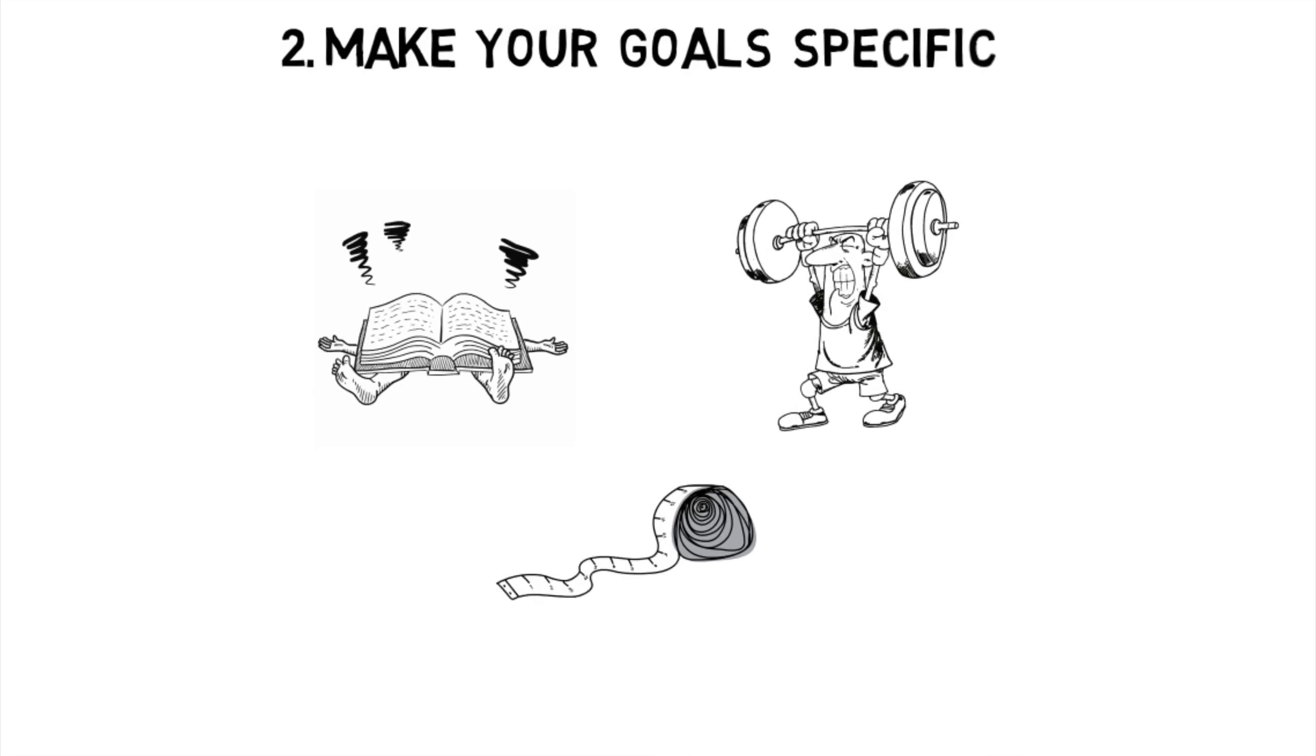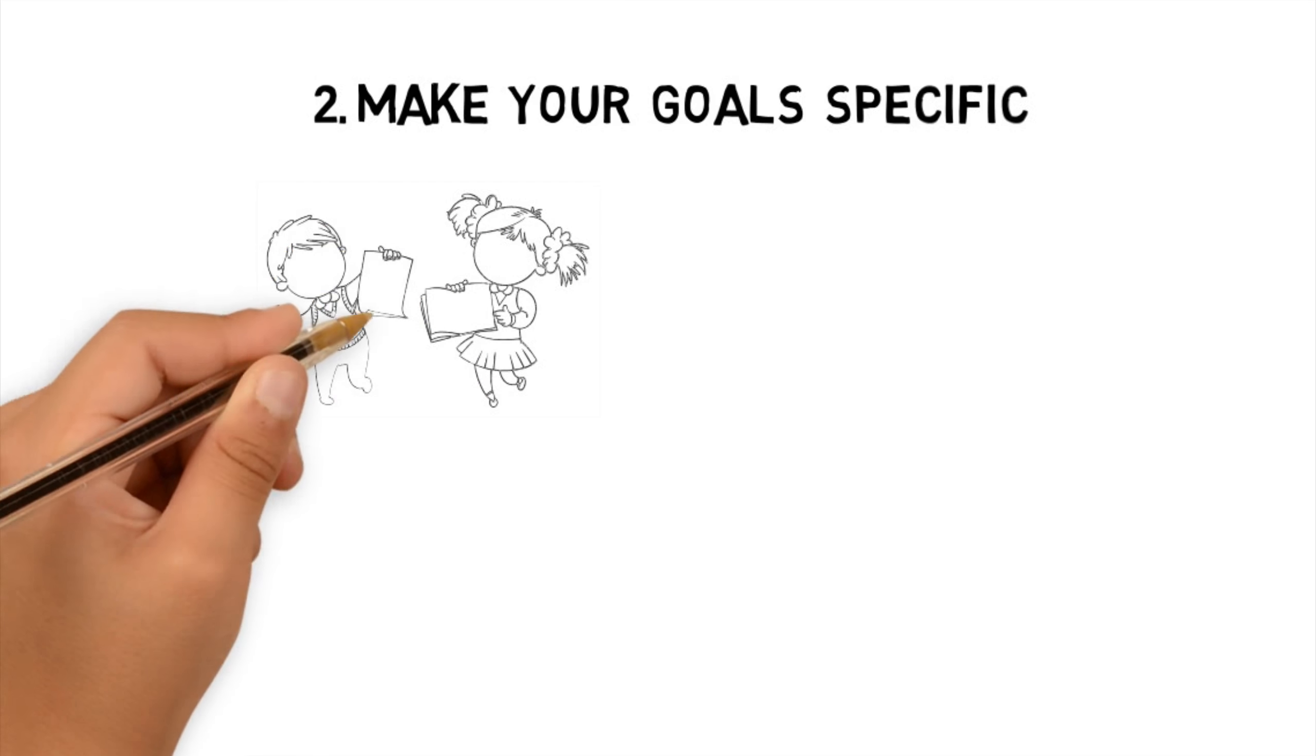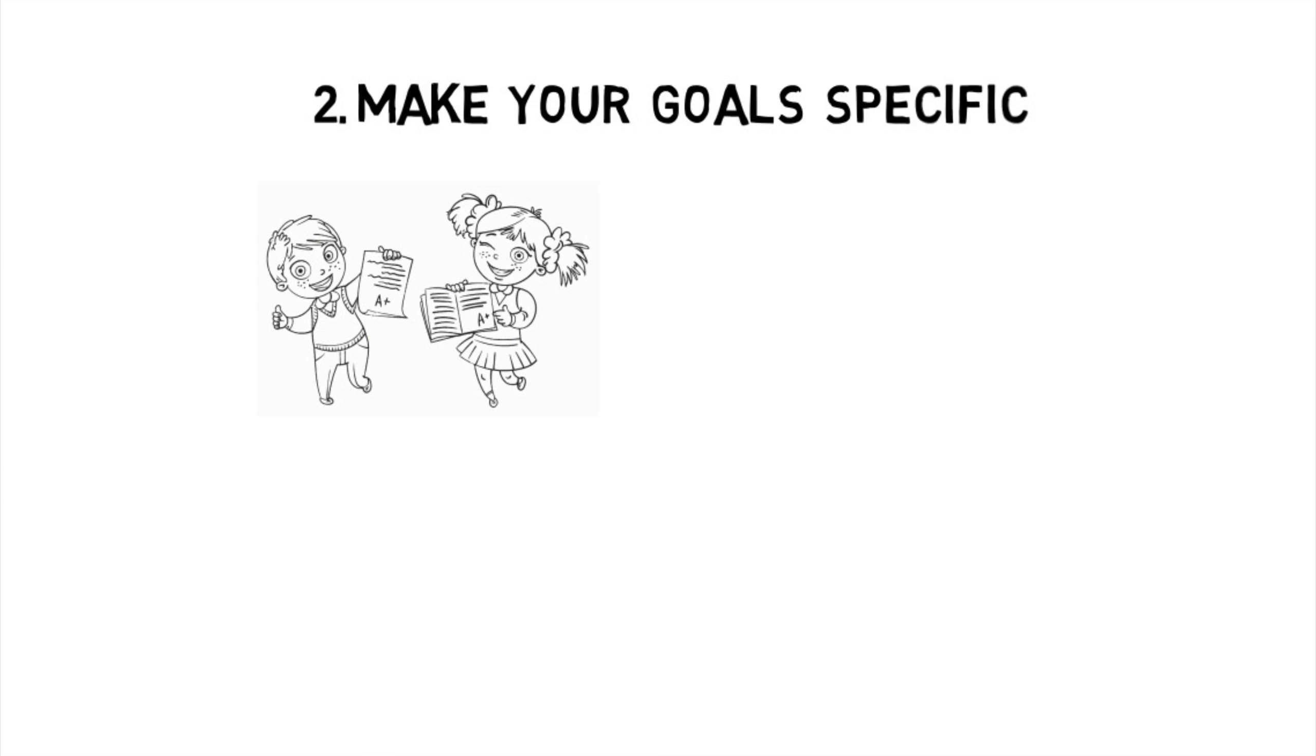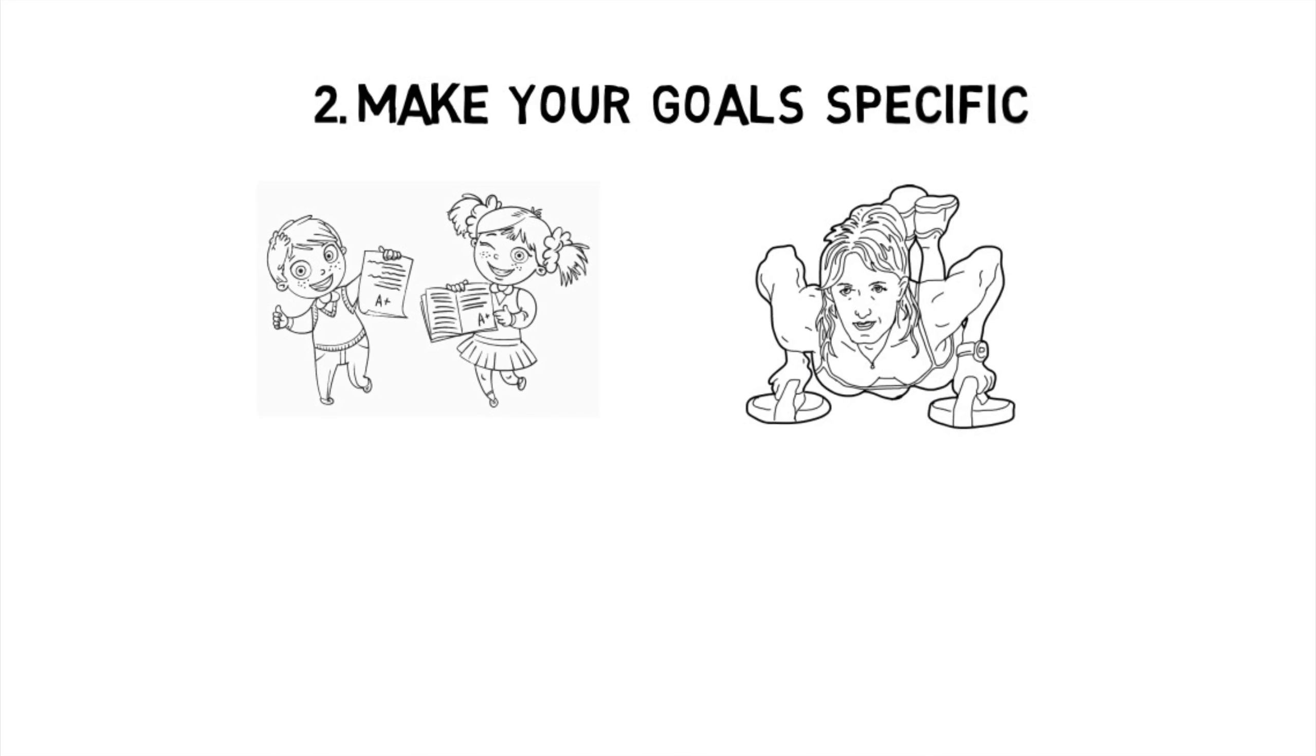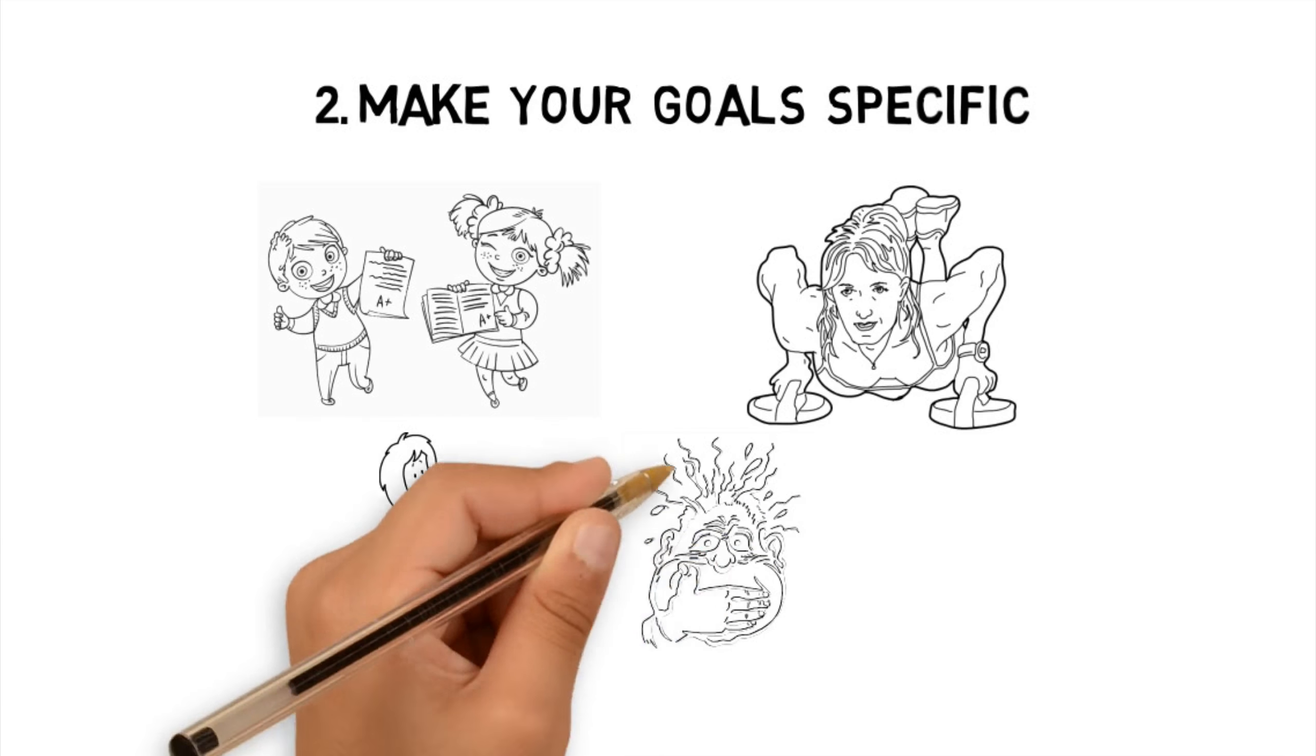Instead, make the goals as specific as possible. Something like I'm gonna get a 90 on my first physics test, or I'm gonna do 25 push-ups a day for a whole month, or something social like I'm gonna be able to look at my crush without puking in fear.